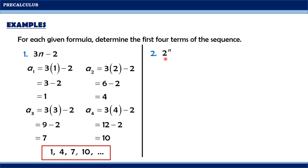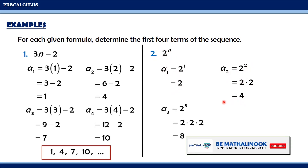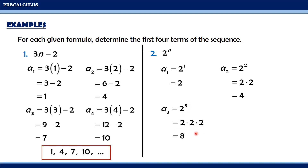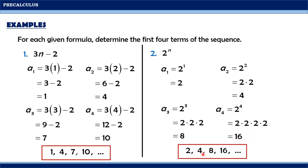For the next formula, 2 raised to n, we solve for the first 4 terms by substituting 1, 2, 3, and 4. A sub 1 equals 2 raised to 1, which is 2. A sub 2 equals 2 raised to 2, which is 2 times 2, equaling 4. A sub 3 equals 2 raised to 3, which is 2 times 2 times 2, equaling 8. A sub 4 equals 2 raised to 4, which is 2 times 2 times 2 times 2, equaling 16. Therefore, the first 4 terms are 2, 4, 8, and 16.